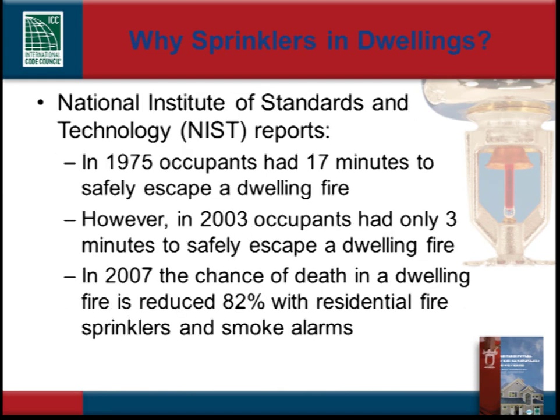The national average shows us that one person will perish in a dwelling fire every 183 minutes. The National Institute of Standards and Technology, commonly referred to as NIST, conducts testing and evaluation of a multitude of issues which affect life safety. NIST Technical Note 1455 compares safe escape times from a typical dwelling fire between 1975 and 2003. NIST found that in 1975, the time for a person to safely escape during the average dwelling fire was 17 minutes. By 2003, the time to safely escape had shrunk to as low as three minutes.